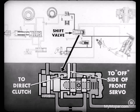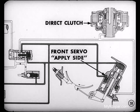When the shift valve moves to the downshift position, it shuts off the line pressure to the direct clutch and to the offside of the front servo. So, with no oil pressure to the clutch, the piston releases the discs and plates. At the same time, line pressure to the apply side of the front servo takes over, causing the servo to apply the front band. And there you are, right back in the starting range.